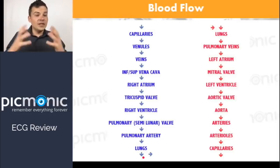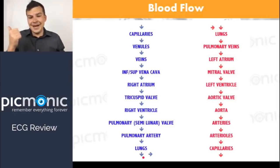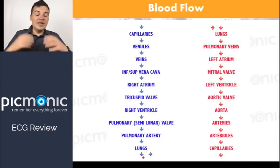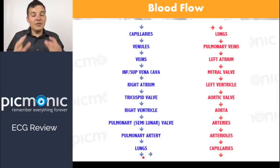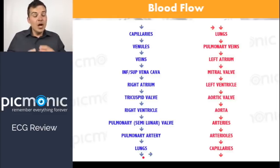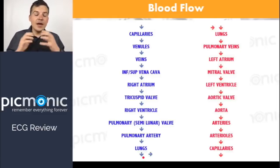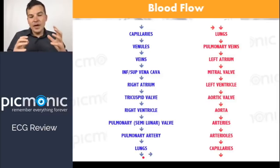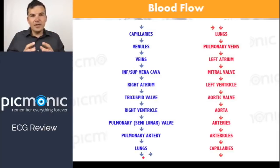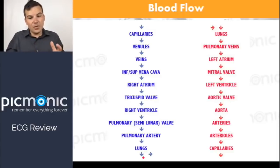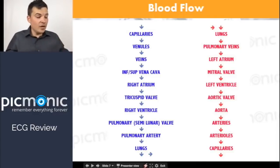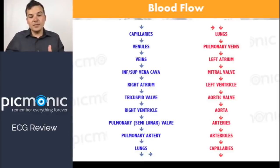The left ventricle is the largest part of the heart — it has to pump out to the entire body, so it's going to be a lot bigger. If the left coronary artery gets blocked, that's a big problem because you're cutting off all the blood supply to the biggest part of the heart that's pumping. You can think about how something like a myocardial infarction can then cause a lot of downstream problems.